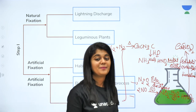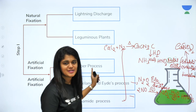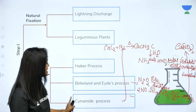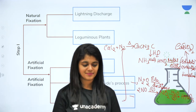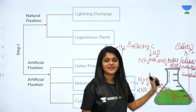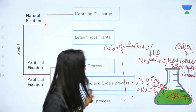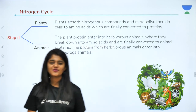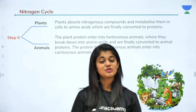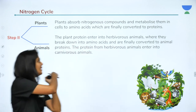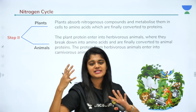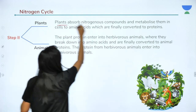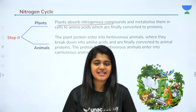In the Haber's process, Birkland and Eyde process, and Cyanamide process — in all three, nitric acid formation is common as an intermediate. All of these processes finally form soluble nitrates in the soil. This completes Step 1 — natural and artificial fixation. Now we move to Step 2 of the nitrogen cycle, where plants absorb the nitrogenous compounds from the soil and metabolize them in their cells to form amino acids.